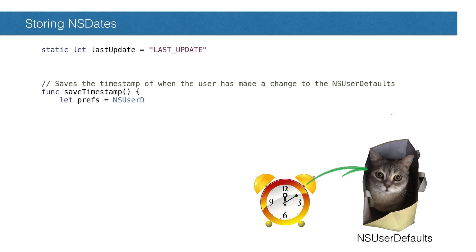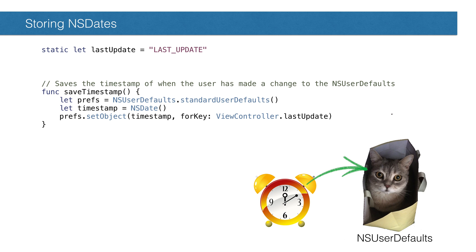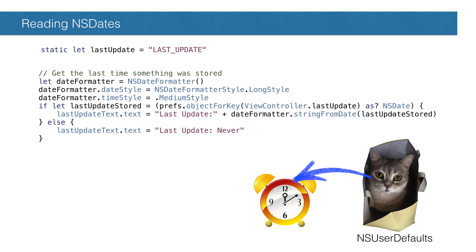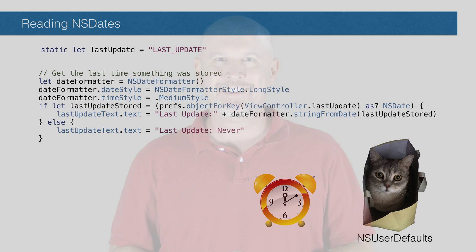The last thing we wanted to do was save a timestamp of when the user modified the defaults. Dates are NSDate objects, so we use the same objectForKey method we used for images. This is simpler because we don't need to do anything special with the object before saving — NSUserDefaults knows it's a date. When we pull it back out, we can get it as a date. Once we have the date object, we can use a formatter to display it in any way we want. And that's how NSUserDefaults works.